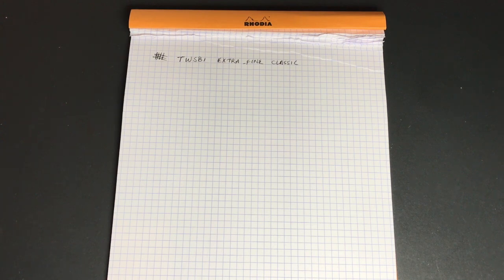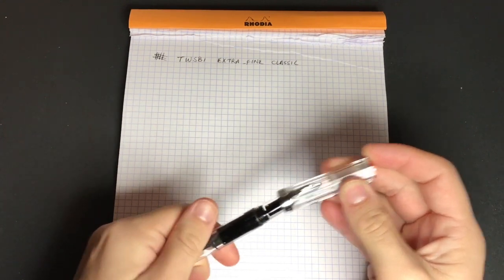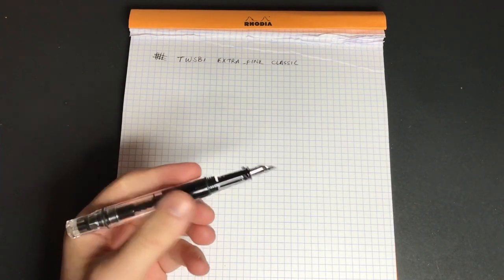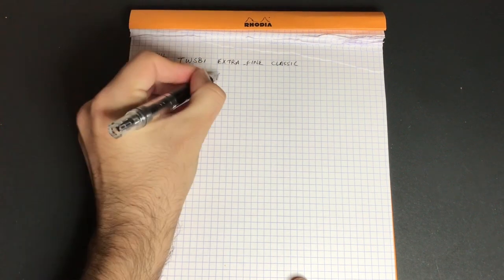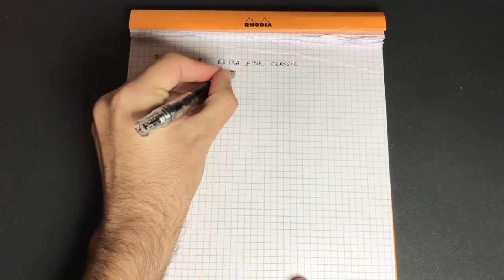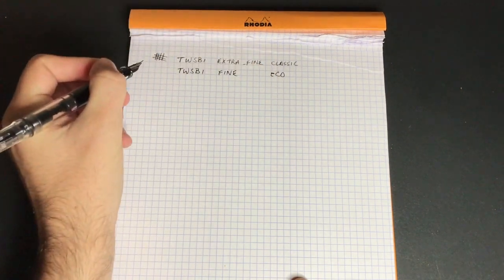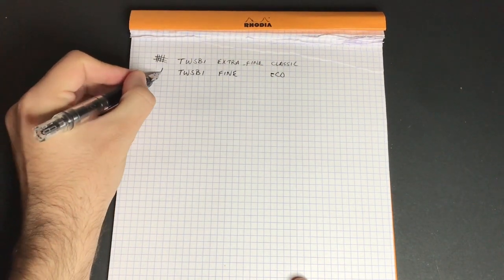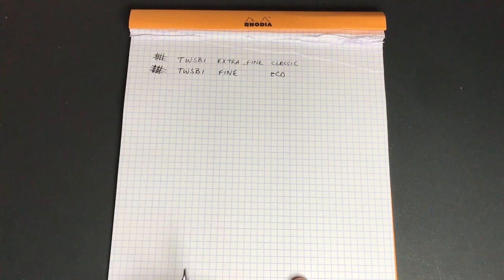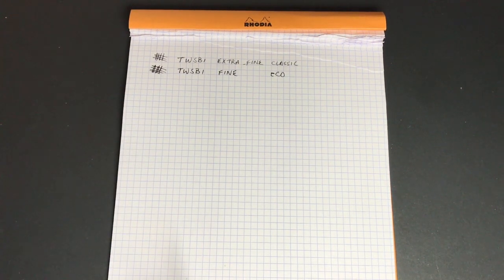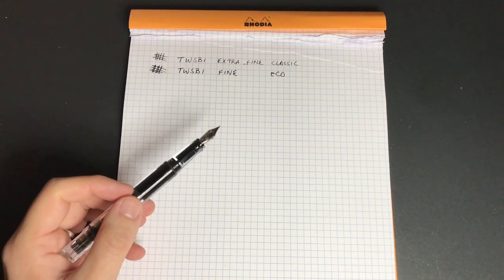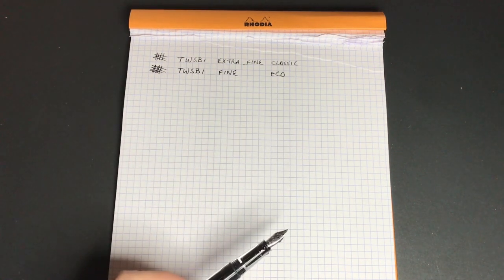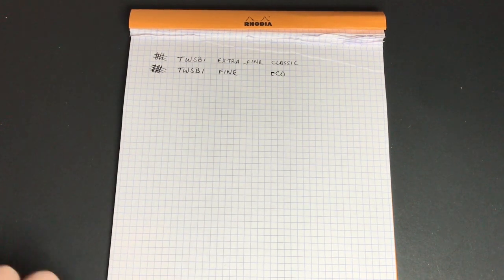Now we move to the Eco which here has the fine nib in it. And as I said this is in the Eco. So yeah the line is a little wider. It's not a huge difference. There is obviously a noticeable difference and it is a tiny bit wetter than the classic but that could be nib to nib, but in terms of the line width you're not getting a huge variation there.